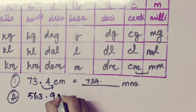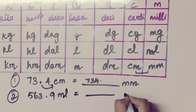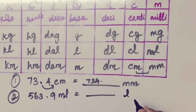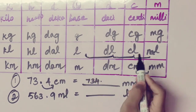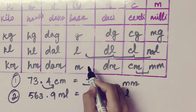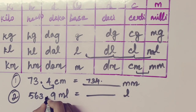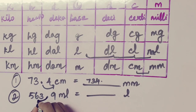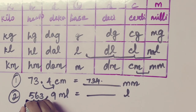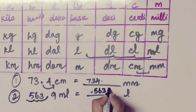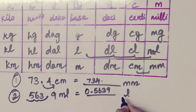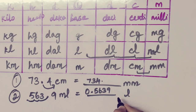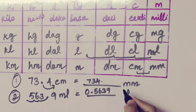563.9 milliliter equal to dash liter. Milliliter is here. How many steps are there? One, two, and three — three times to the left side. So we apply the point three times to the left side: one, two, three. The answer is 0.5639 liter. So milliliter to liter — we can do unit conversion easily.